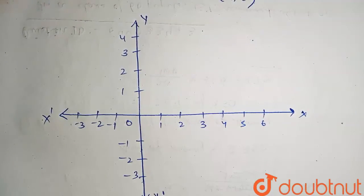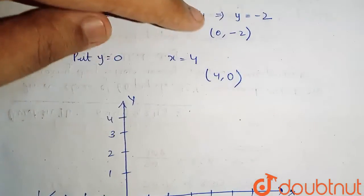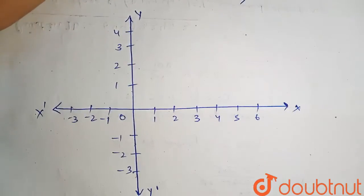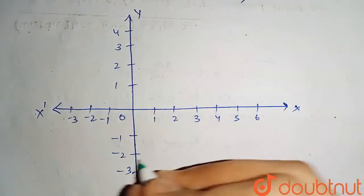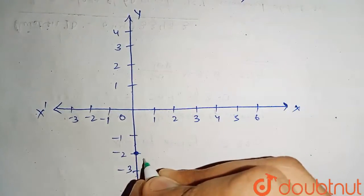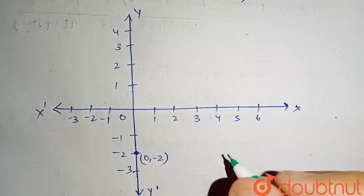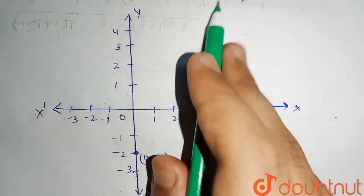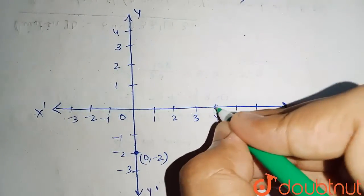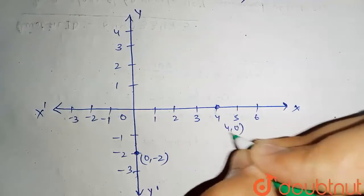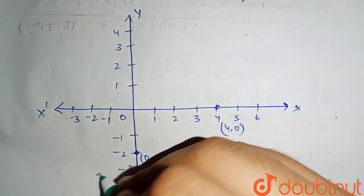So the first point is 0, minus 2. So 0, minus 2 is this point. And the second point is 4, 0. So this is the second point, 4, 0. So now we get the two points. Now we'll plot the line.